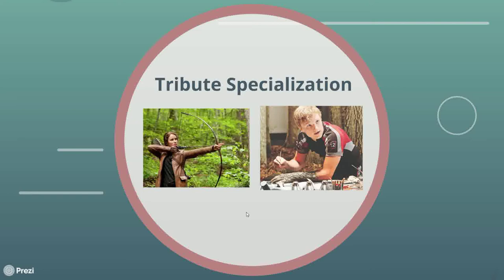Katniss is seen to be particularly keen with a bow, Peta is excellent at camouflaging himself and hurling massive weights, and other tributes have skills such as creating poisons, hiding, scavenging, and even knife throwing.